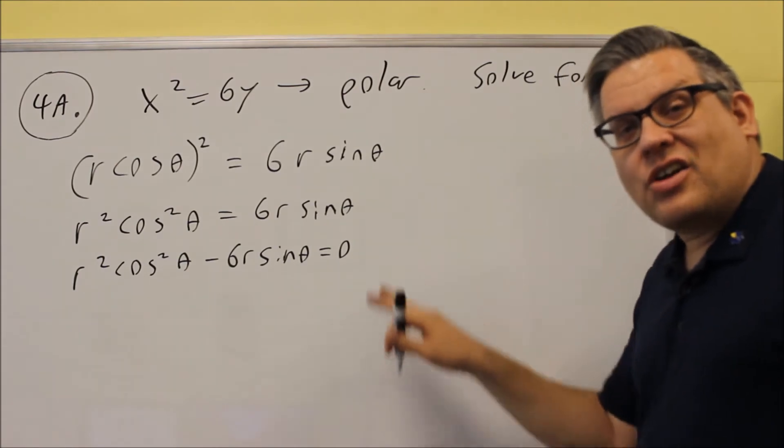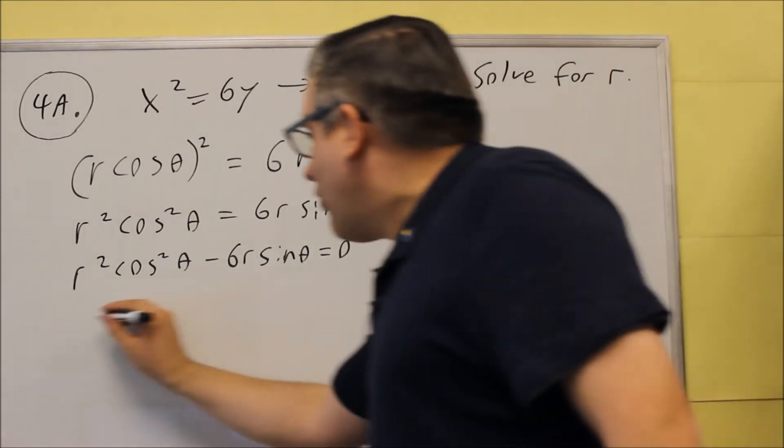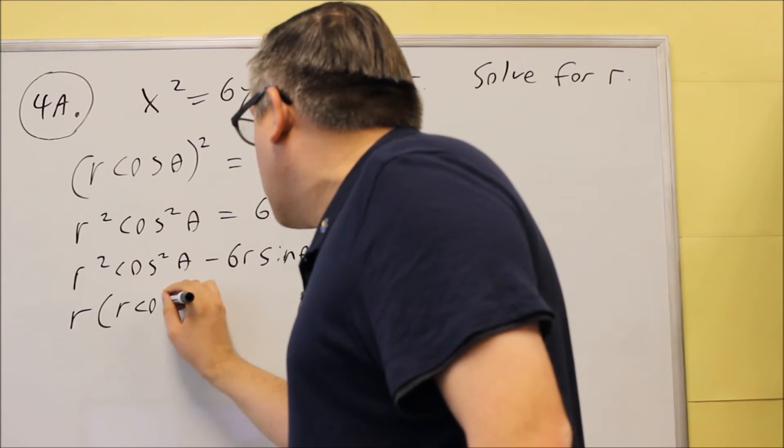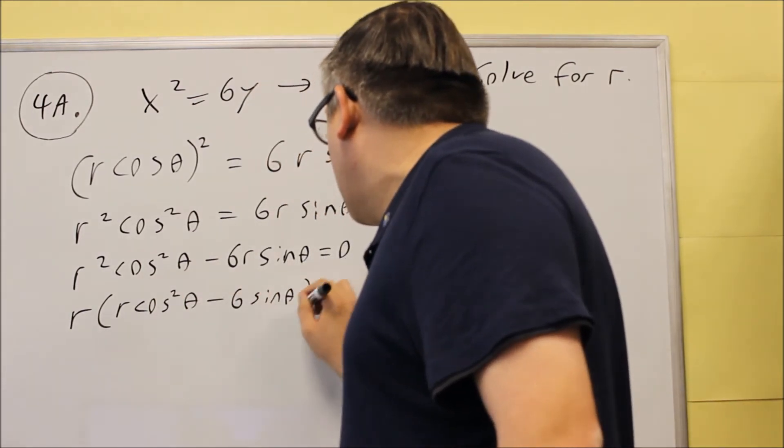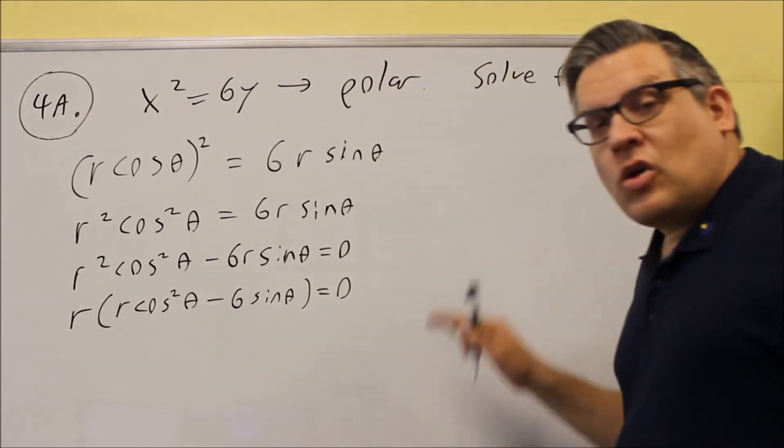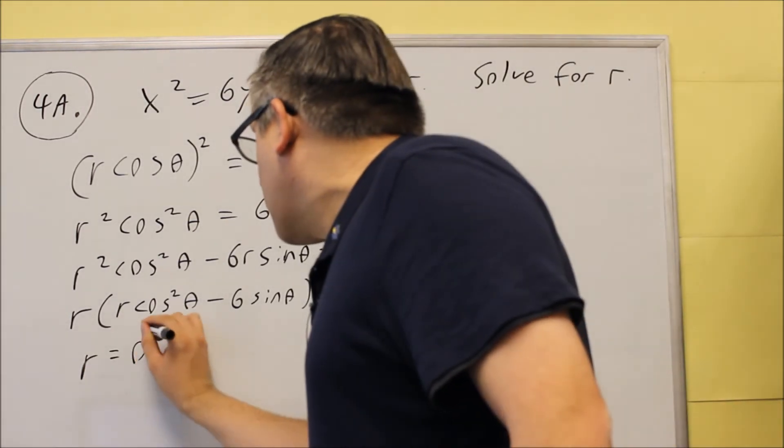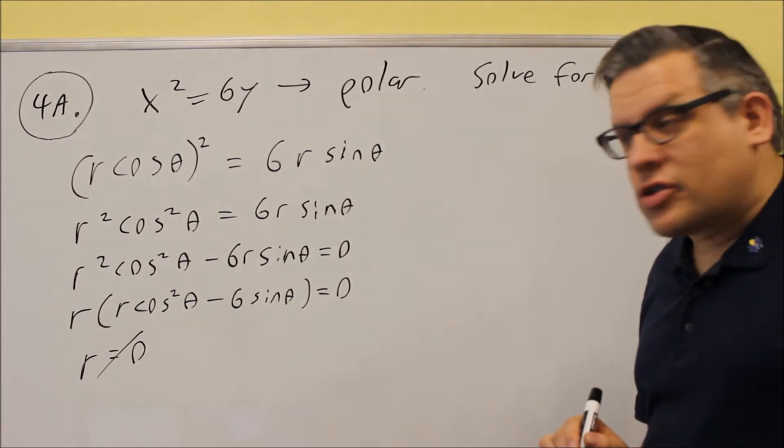So subtract it over, get it equal to zero, and then factor out the common factor, which is an R. You'll get R cosine squared theta minus 6 sine theta left over. When you set both of them equal to zero, yes, you will get R equals zero, but we're not going to include that as one of the solutions.